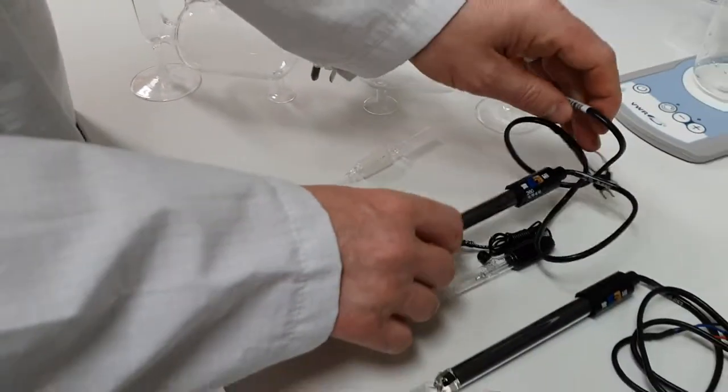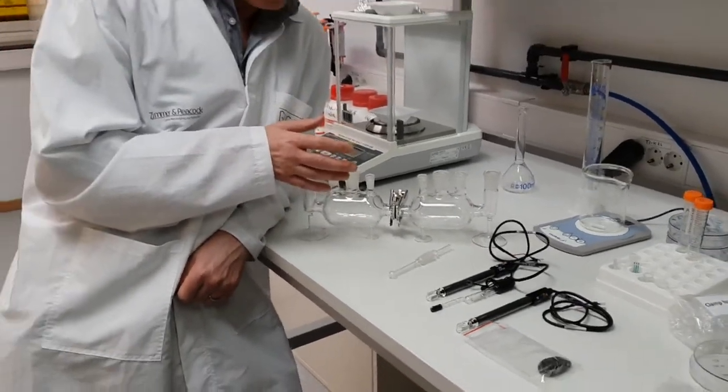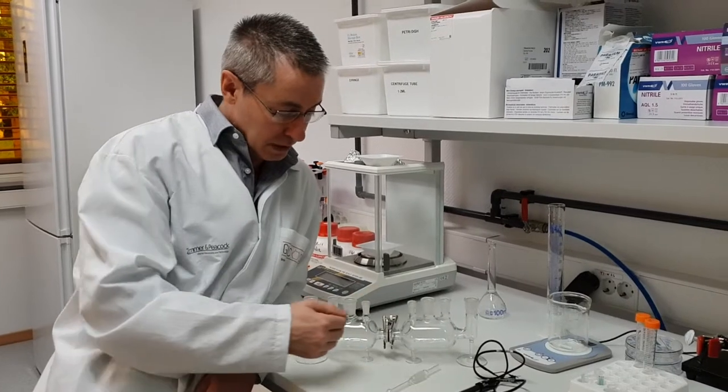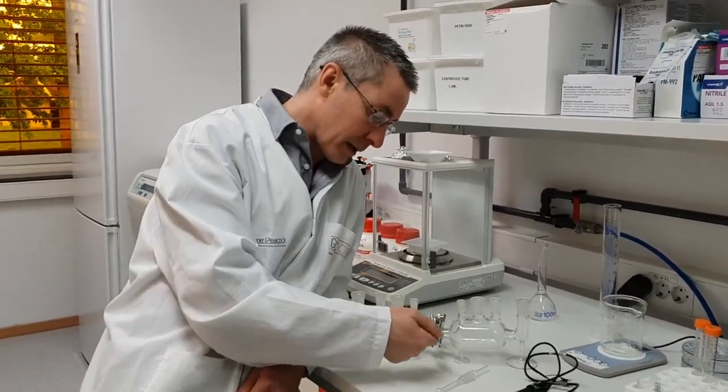So a quick summary. This is the Divanathan cell from Zimmer and Peacock. You have two half cells which have an approximate volume of 100 milliliters each. There's these lugging capillaries.